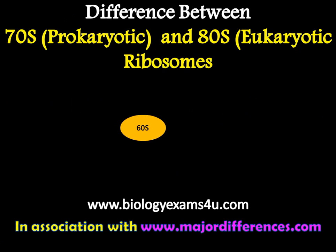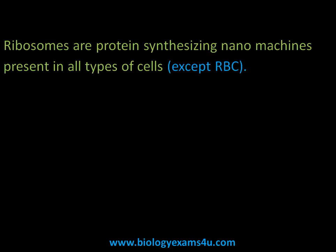Hi friends, welcome to Biologics.com. Today the topic of our discussion is the difference between 70S and 80S ribosomes. Ribosomes are extremely small protein-synthesizing nanomachines that are present in all types of cells. These nanomachines are responsible for the production of all types of proteins inside the cell.